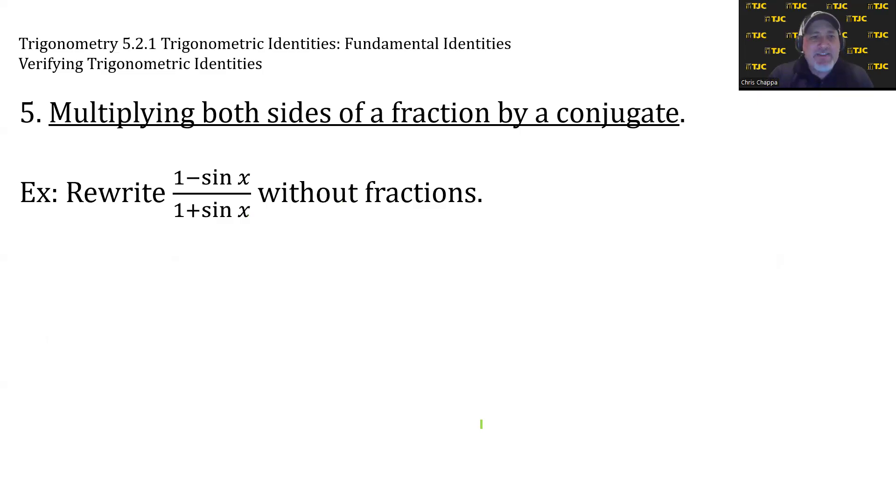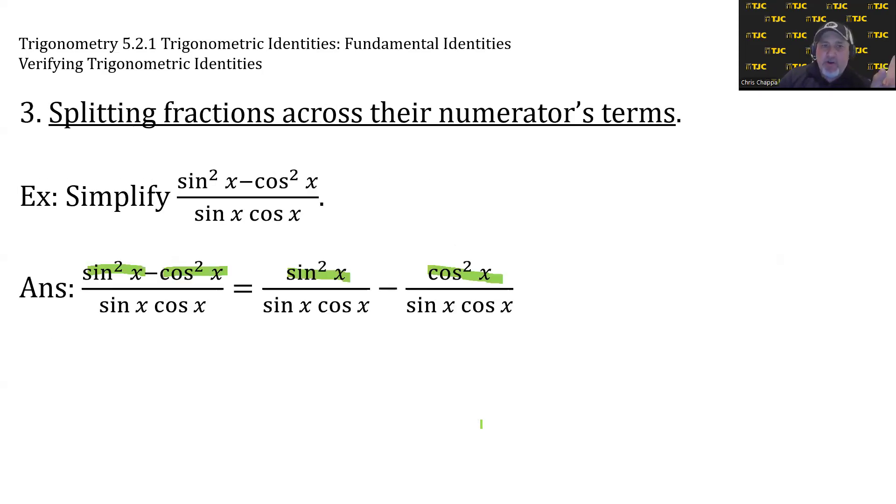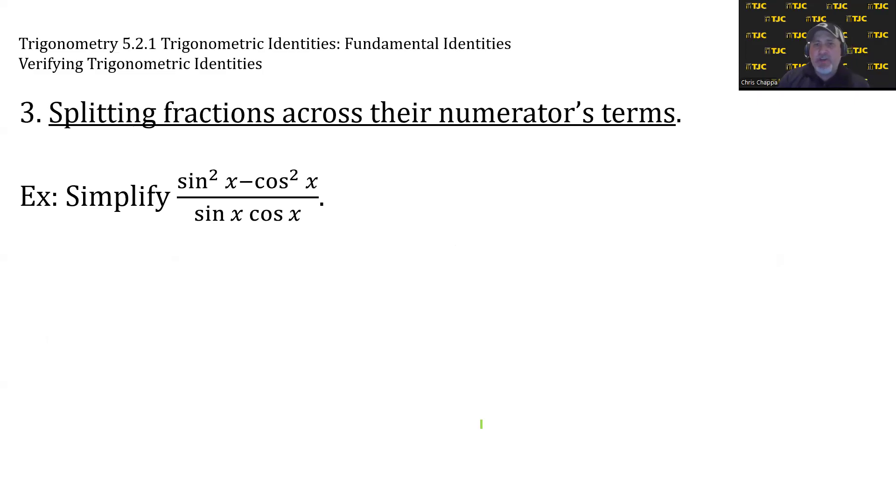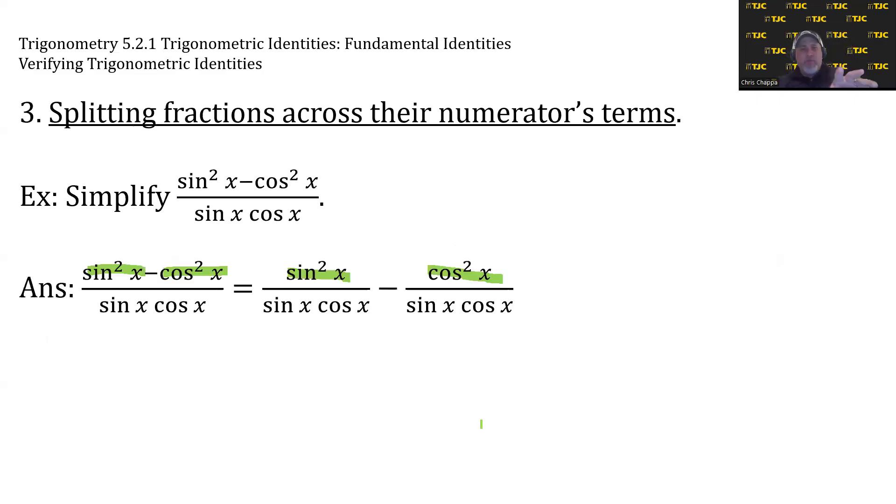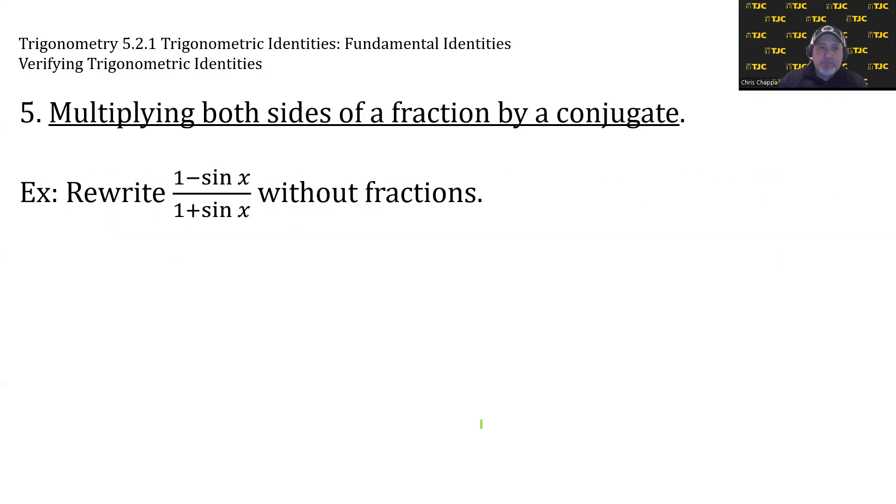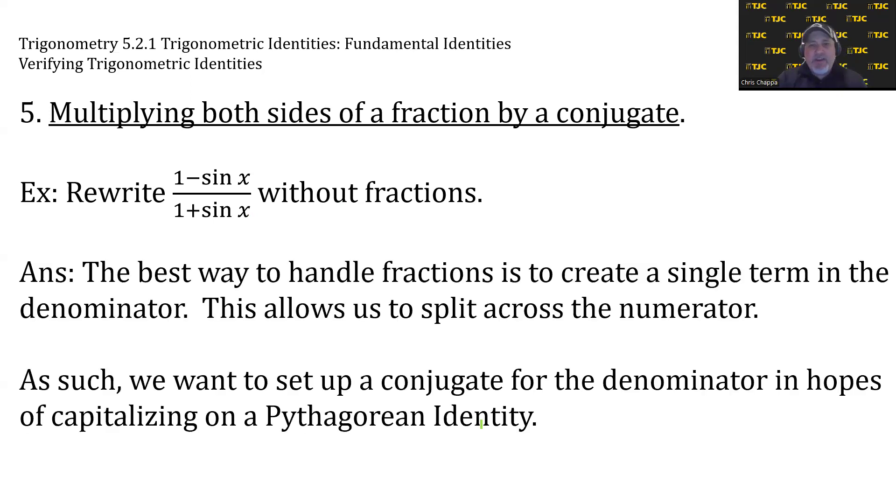For example, let's rewrite (1 - sin x)/(1 + sin x) without fractions. Without any other guidance, if you wanted to make the fractions disappear, the plus in the bottom is an obstacle because if the bottom were a single term, we could split the fractions like we did here. Anytime the denominator is a single term, we can split across the numerator and reduce. But in this fraction, we don't have a single term in the denominator. We have 1 + sin x. But the best way to handle this is to create a single term in the denominator.